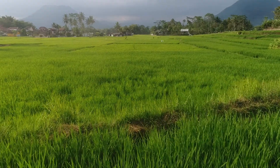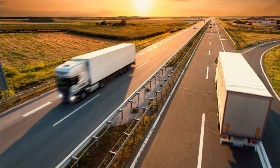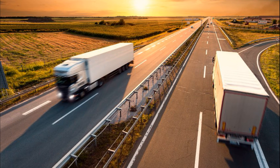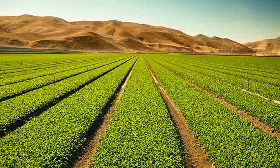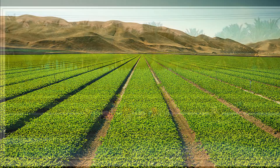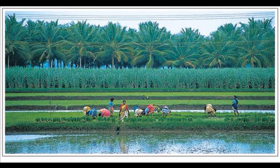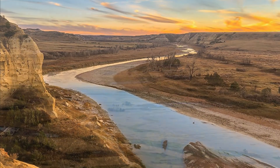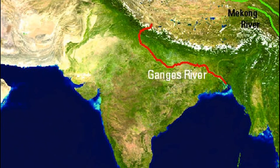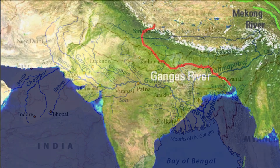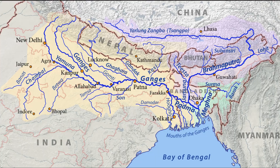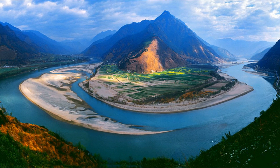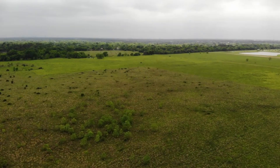Generally, plains are very fertile. Construction of transport networks is easy. Thus, these plains are very thickly populated regions of the world. Some of the largest plains made by rivers are found in Asia and North America. For example, in Asia, these plains are formed by the Ganga and the Brahmaputra in India and the Yangtze in China.